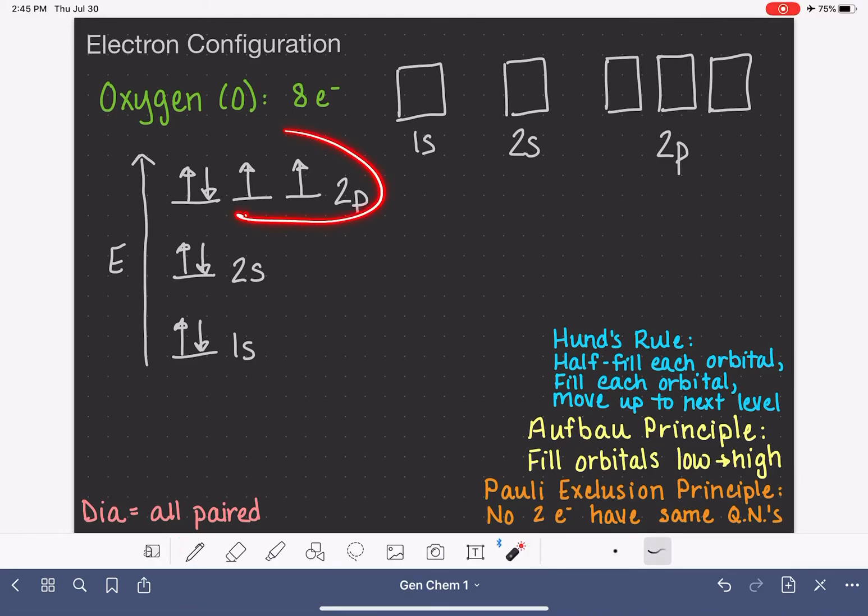Since we half filled the 2p orbital completely, when it was time for us to put that 8th electron in there, we were allowed to start pairing it up. I always go from left to right and then just go back. But that paired up electron could have been here or it could have been here. It does not really matter where it goes. Let's go to the box diagram. 1, 2, 3, 4, 5, 6, 7, 8.